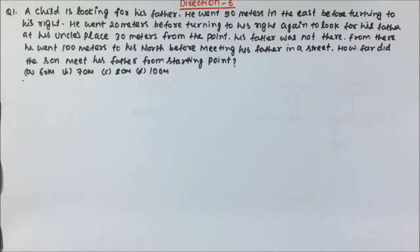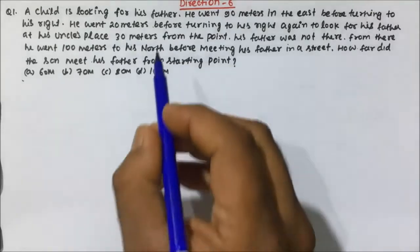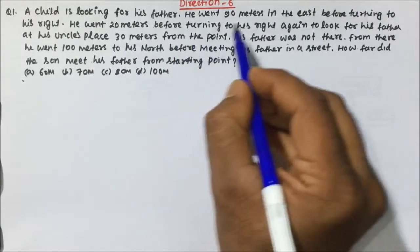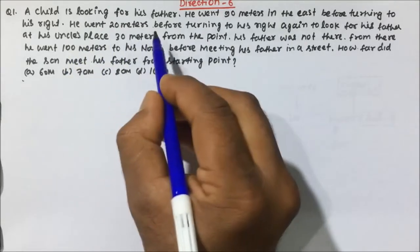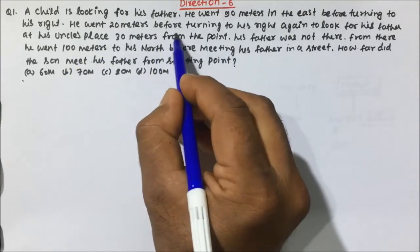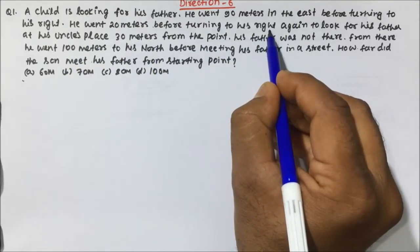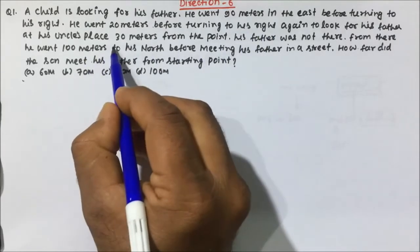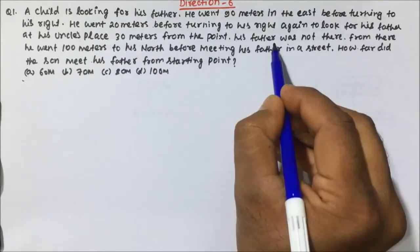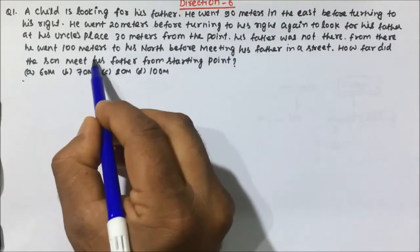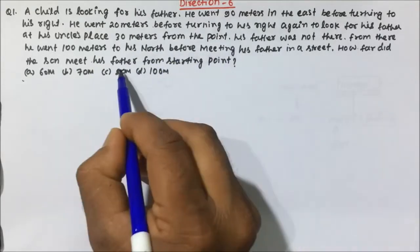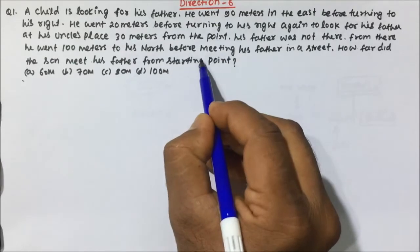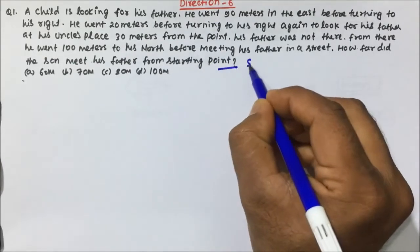So our today's question is one of the very important questions. Let's try to understand and solve it. Here a child is looking for his father. He went 90 meters in the east before turning to his right. He went 20 meters before turning to his right again to look for his father at his uncle's place, 30 meters from the point. His father was not there. From there he went 100 meters to his north before meeting his father in a street. How far did the son meet his father from the starting point?